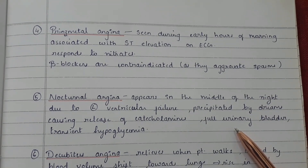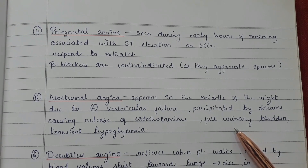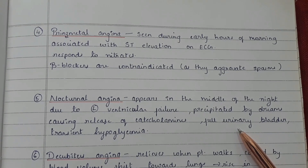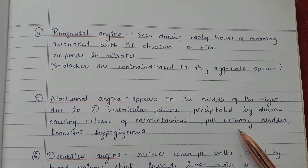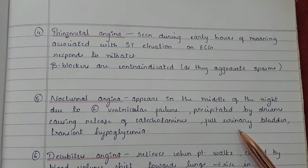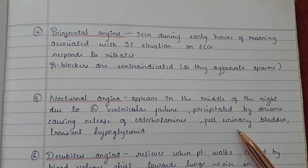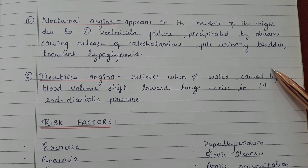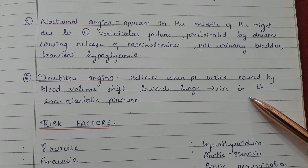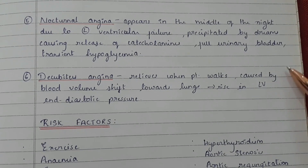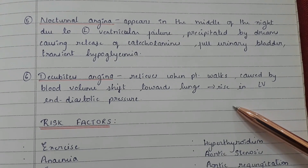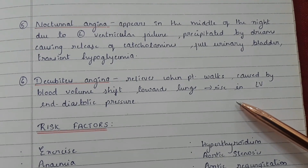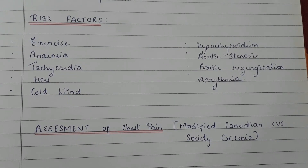Nocturnal angina appears in the middle of the night due to left ventricular failure. It is precipitated by dreams causing release of catecholamines, a full urinary bladder, and transient hypoglycemia. The sixth type is decubitus angina, which is relieved when the patient walks and is caused by blood volume shift towards the lungs and a rise in left ventricular diastolic pressure.